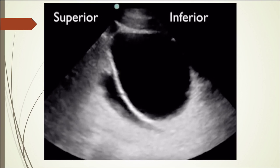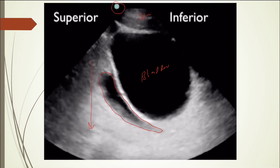This looks like a positive FAST. Again, this is the bladder here. This anechoic area is fluid, and in a trauma I would assume it would be blood. This looks like it's probably a transverse view. This is the skin, and this is going deeper into the patient. The probe marker matches to the screen, so that would be superior and that would be inferior.